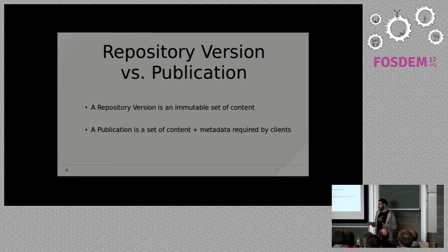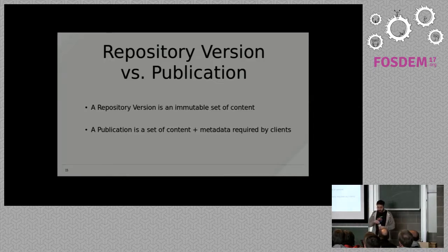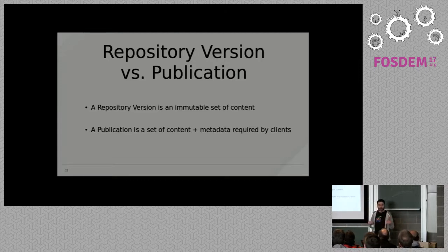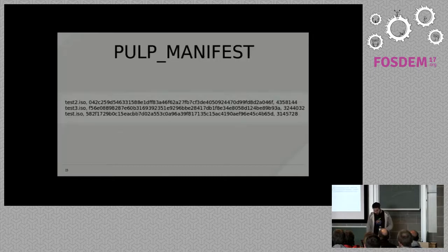I want to point out the difference between a repository version and a publication. The repository version is an immutable set of content in Pulp, and the publication is the same set of content plus any metadata that needs to be present for a client to consume it. For the file plugin, that's the Pulp manifest file which lists all the files available in that repository.